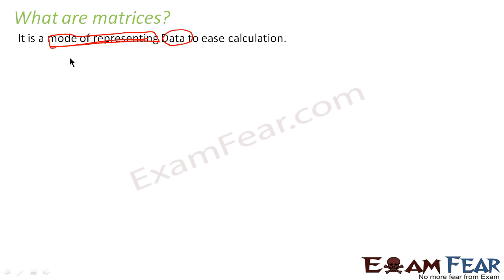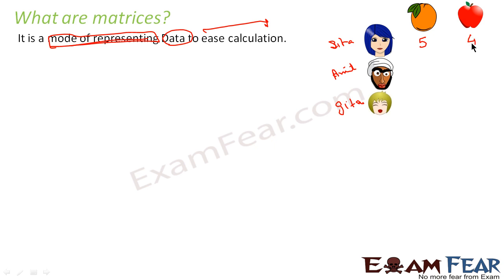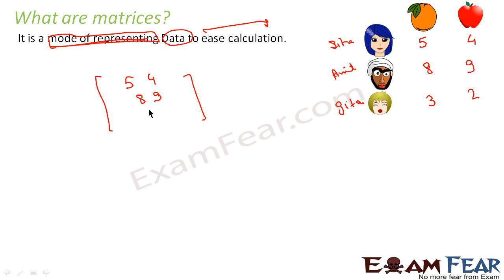Let me give you an example. You have Sita, Amit, and Gita — three people. They have some oranges and apples. Sita has five oranges and four apples. Amit eats more and he has eight oranges and nine apples. Gita is a tiny girl and she has only three oranges and two apples.